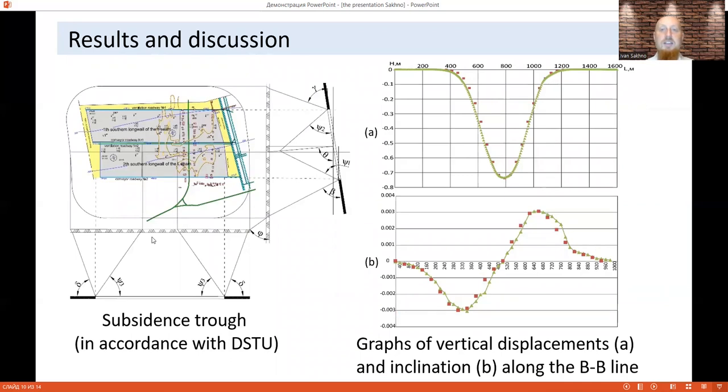The next part is the results and discussion. The verification and calibration of the basic model were performed with predicted subsidence determined by normative documents Ukrainian DS2. The result of the graphic calculation of the subsidence trough with the corresponding cross-section is shown on the slide. As can be seen from the right part of the slide, the numerical model allows to adequately describe the process of surface deformation. The respective divergences are minus 5% and plus 5%.